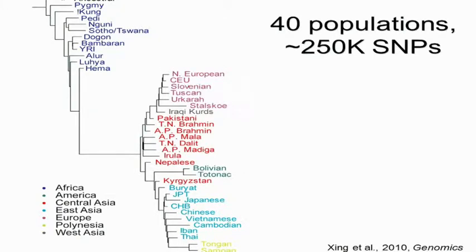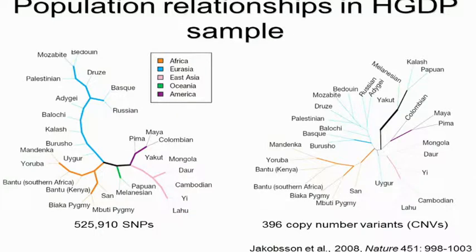Another way of looking at this variation is to map it out on a tree. These trees can be misleading because they're sometimes interpreted as meaning that populations split and then had no subsequent contact — and of course, as humans, there's always been subsequent contact. But it's a convenient way of showing how similar populations are to one another. Populations do tend to group according to their geographic location, and that's consistent across many different kinds of studies. With a completely different dataset — the Human Genome Diversity Project — we see the same pattern for both SNPs and copy number variants.